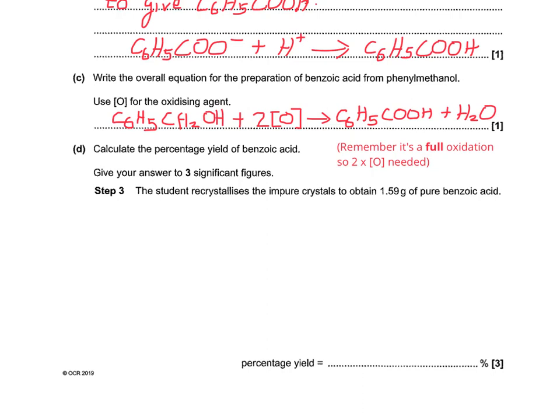For the next part, where they want the percentage yield of benzoic acid, the first thing to note is that they say give your answer to three significant figures. If you're prone to forgetting the sig figs by the end of your calculation, put a reminder to yourself down by the answer line — that way you're unlikely to forget when you write your answer in. We need to go back and check the data now, so I'm going to copy it into this bit of empty space here to help us get started, then write the calculation in.